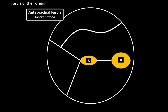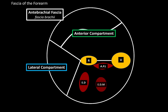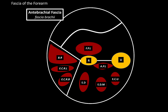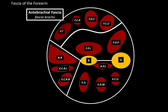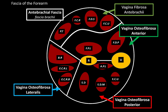So the forearm has a posterior compartment, an anterior compartment, and a lateral compartment. The posterior compartment consists of extensor muscles like the abductor pollicis longus, extensor digitorum, extensor digiti minimi, and extensor carpi ulnaris. In the lateral compartment, we have muscles like the brachioradialis, extensor carpi radialis longus, and extensor carpi radialis brevis. The anterior compartment contains muscles like the flexor pollicis longus, flexor digitorum profundus, and superficially, the flexor carpi ulnaris, flexor digitorum superficialis, flexor carpi radialis, and pronator teres. This gives us vagina osteofibrosa posterior, vagina osteofibrosa lateralis, vagina osteofibrosa anterior, and vagina fibrosa antebrachii.